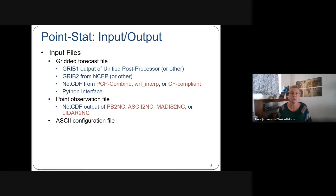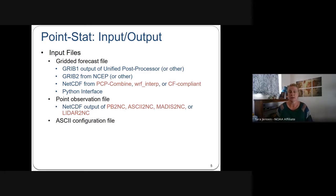As for inputs, PointStat takes in gridded Grib1 and Grib2 files from the unified post-processor or other post-processors, NetCDF formats written by preprocessing tools like PCPCombine, NetCDF formats for WARF and CHIRP, and any CF-compliant NetCDF files. Additionally, Python embedding is supported in the PointStat tool.